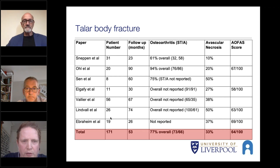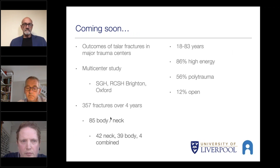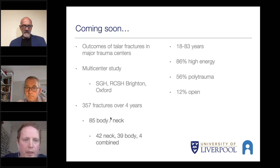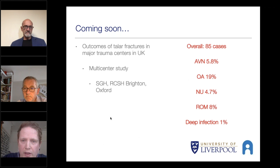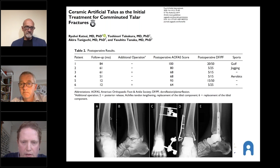Regarding talar body fractures, our review found the main problem is arthritis, which is as high as 70 to 80 percent following fixation. This is unpublished work, but from three major trauma centres in our region in the UK, with progression of different treatments, they are now reporting an AVN rate as low as six percent in all comers. For severely damaged cases, a case series of six patients using a ceramic talus showed very good results, though I have not done this in my practice as yet.